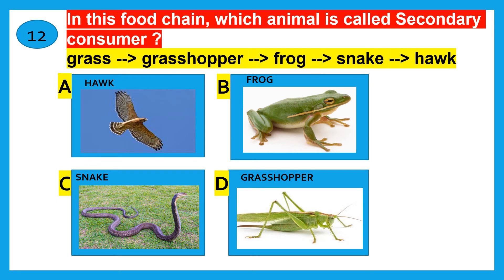In this food chain, which animal is called the secondary consumer? Hawk, frog, snake, grasshopper? The correct answer is frog.